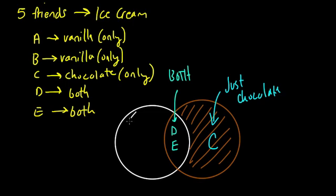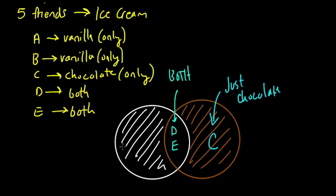And then what's left? Well, this area over here is for just vanilla. Because this vanilla circle already includes friends D and E, because they do want vanilla, but they also want chocolate. So here is just vanilla. They don't want anything else. Any other type of flavor. So that's for A and B.